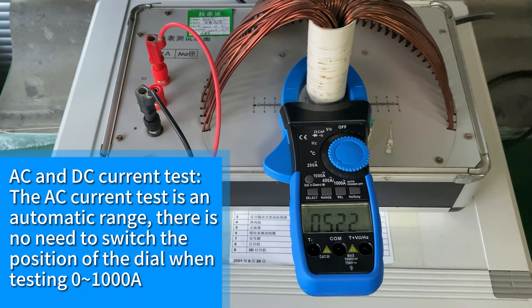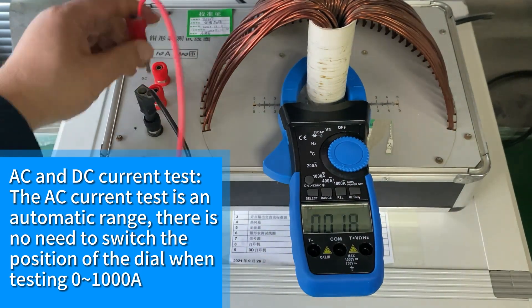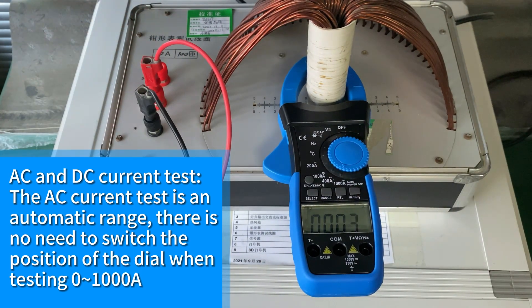AC and DC current test: The AC current test is an automatic range, there is no need to switch the position of the dial when testing 0 to 1000 Ampere.